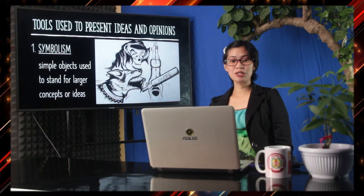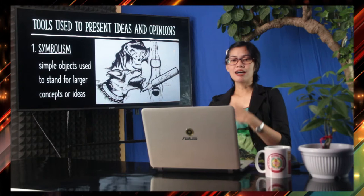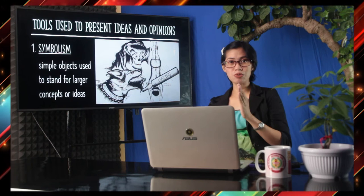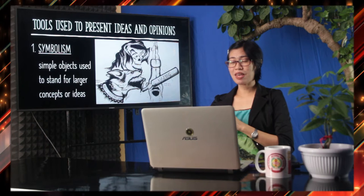The first tool used to present ideas and opinions is symbolism. Symbolism refers to simple objects used to stand for larger concepts or ideas. Instead of drawing complicated concepts, the cartoonist simply uses objects to represent them — just like in the guess-what activity we had earlier, where those images could be used to represent bigger or more complicated ideas. Now, what symbols can you see in the editorial cartoon we have here?